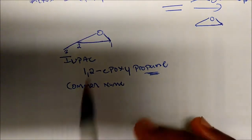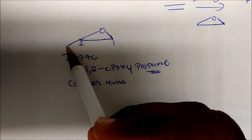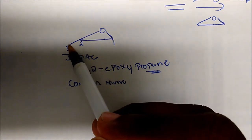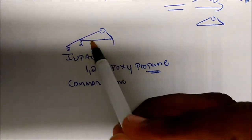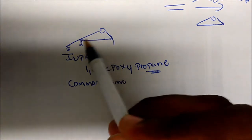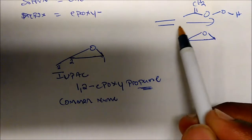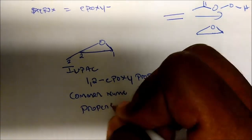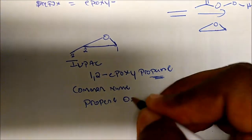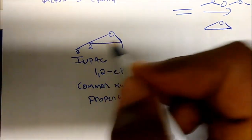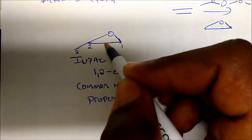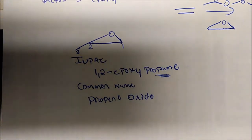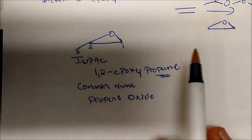So the common name: our longest continuous chain was propene — one, two, three — because we're going to pretend it's an alkene, as if we got this from an alkene. So the common name is propene oxide, where 'oxide' represents the epoxide where the alkene bond should have been. Let's get into more examples to get the concept clear.